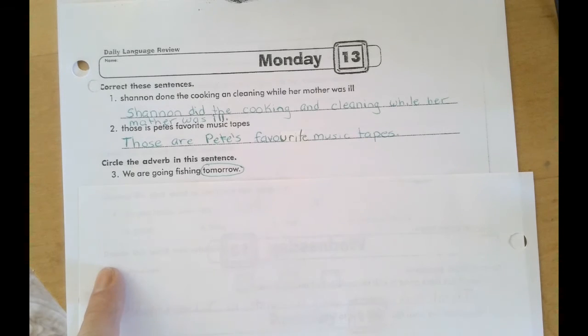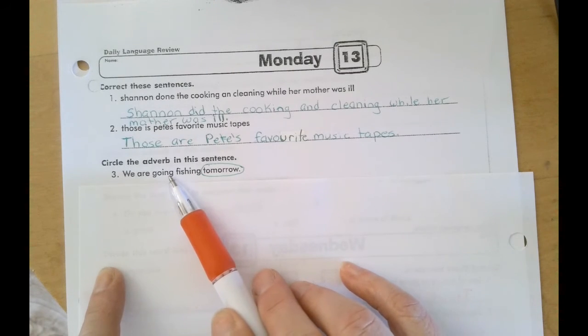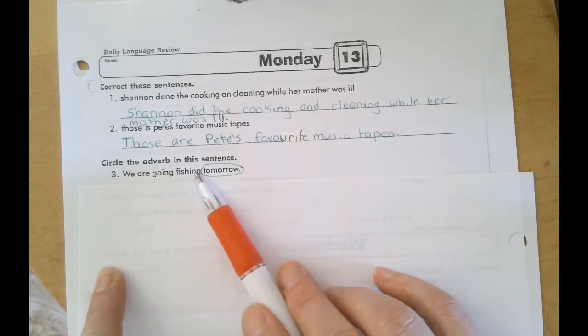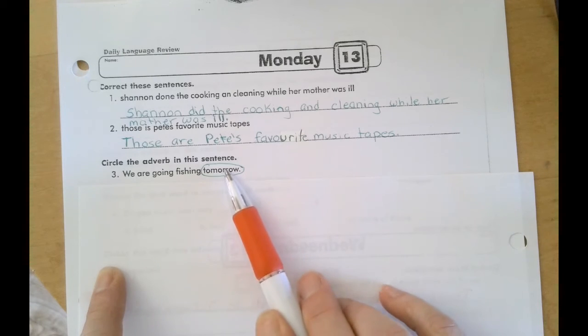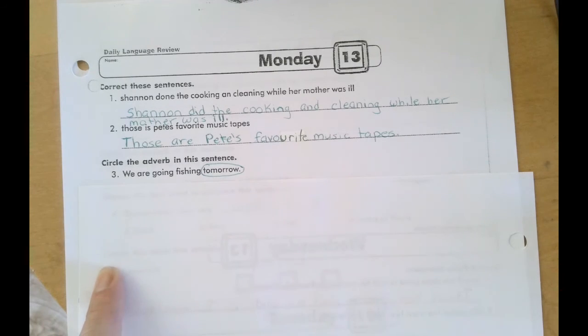Number three, the adverb is tomorrow. The verb being going. And actually you have a verb phrase, are going fishing is your whole verb phrase. And tomorrow tells you when you are going to do this. So you actually have three words working as verbs and one as your adverb.